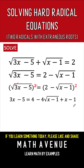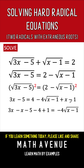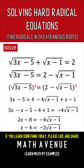Then we gather all like terms. The 3x stays; the x becomes minus x on the left; we copy the minus 5; the plus 4 becomes minus 4 on the left; and the minus 1 becomes plus 1. On the right side we have negative 4 times the square root of x minus 1. Combining like terms: 3x minus x is 2x; minus 5 minus 4 plus 1 is minus 8. Then we divide each term by 2, simplifying the equation to x minus 4 equals negative 2 times the square root of x minus 1.